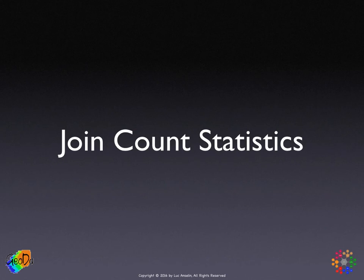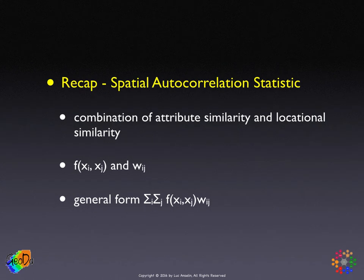Joint count statistics. We'll start with a quick recap of the notion of a spatial autocorrelation statistic. Such a statistic is a combination of attribute similarity — the similarity of values at two locations — and locational similarity. The latter is typically expressed in a spatial weights matrix.